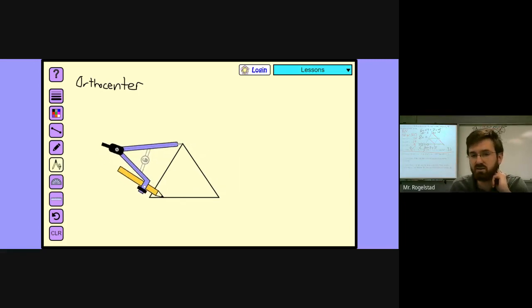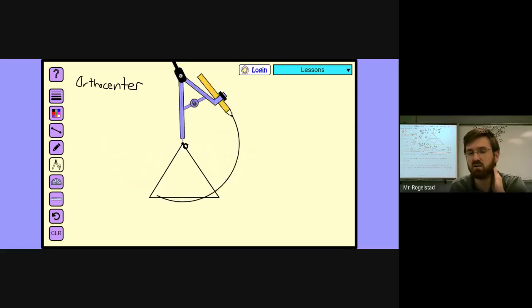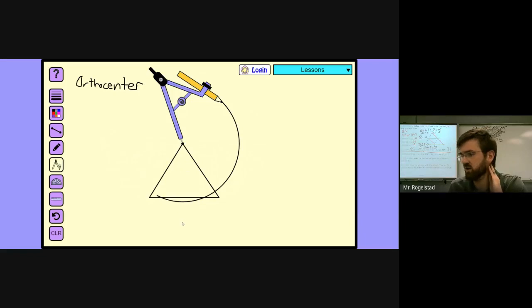Go to one of the sides and lock your compass. Now what you want to make sure is when you make the arc, it should hit the other side twice. Hopefully it doesn't do that to you, but it's okay if it does. It just doesn't look as nice.